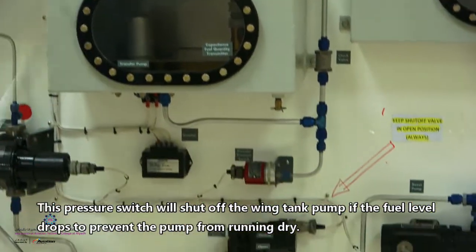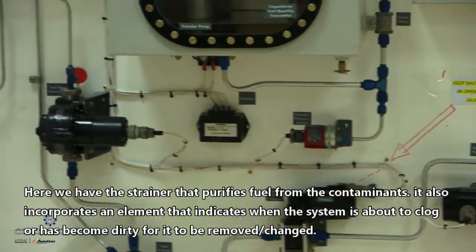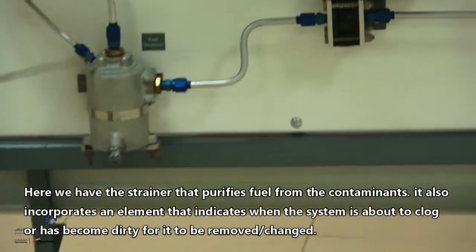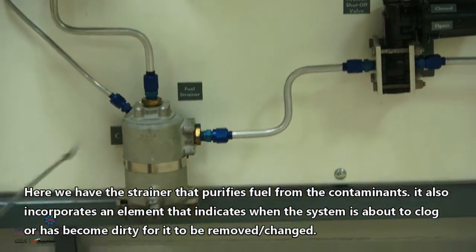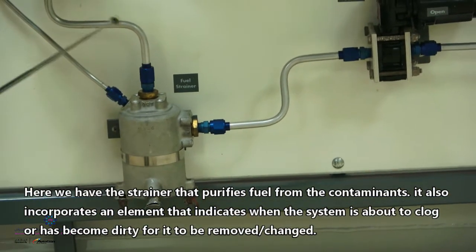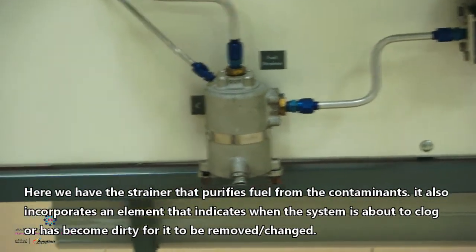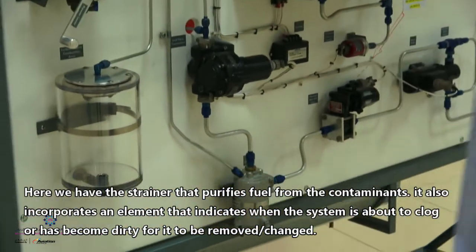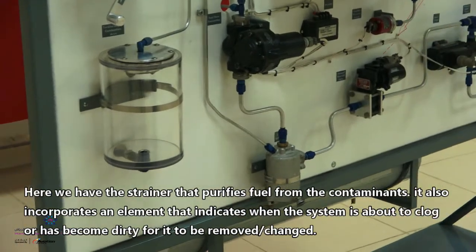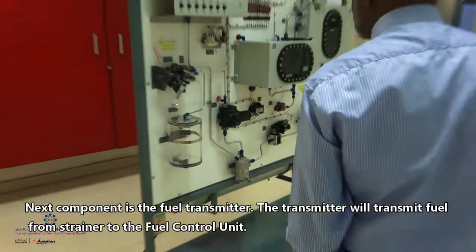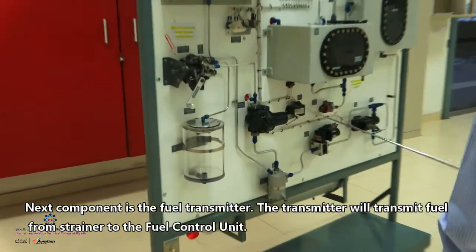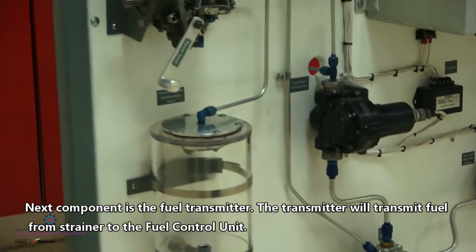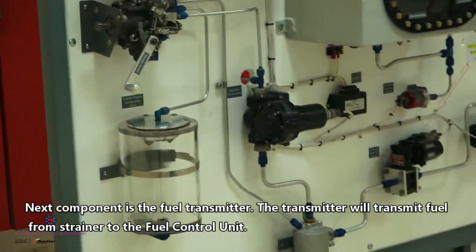Now, here you have the strainer. The strainer actually cleans the fuel from all the contaminations and also we have an element inside. We check it if there is any contamination or any problem inside to clean it or to change it. Next to it, the next component is the fuel transmitter. This fuel transmitter will transmit the fuel from the strainer all the way to the fuel control unit.